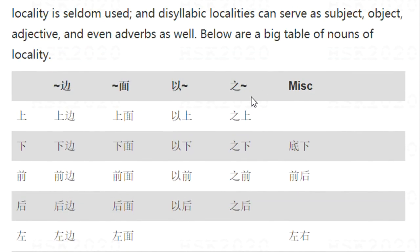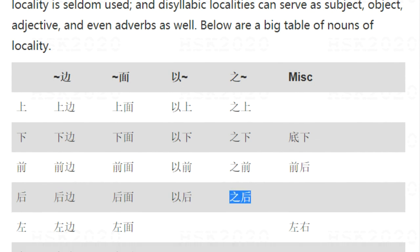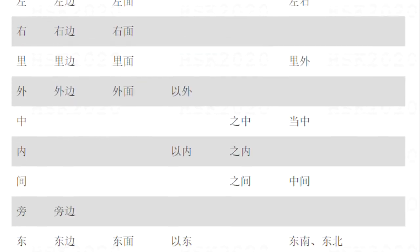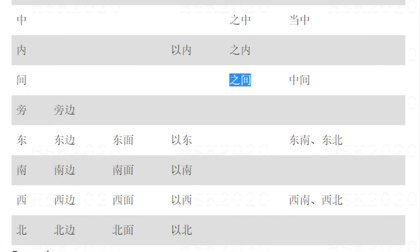Another category uses 之, meaning 'of'. 之上 means above. 之下, 之前, 之后. 之中 means in the middle. 之内 means inside. 之间 means in between.